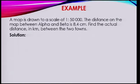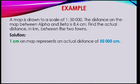We see an example together. A map is drawn to a scale of 1 is to 50,000. The distance on the map between alpha and beta is 8.4 cm. You are asked to find the actual distance in km between the two towns. We know that 1 cm on the map will represent an actual distance of 50,000 cm.